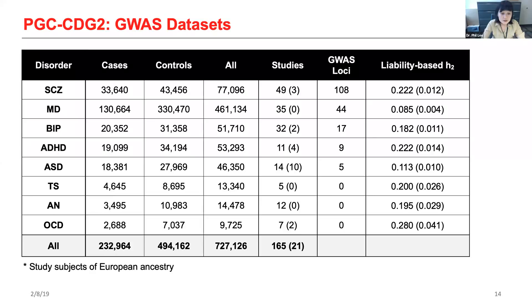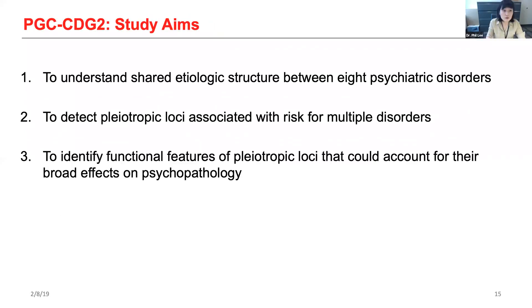Using these datasets, we had three major aims. First, we wanted to understand whether there is any shared etiologic structure or genetic relationship between these eight psychiatric disorders. We also aimed to identify specific risk loci and genes with broad pleiotropic effects. And lastly, we wanted to investigate whether there are any functional features of pleiotropic risk loci that could explain their broad effects on psychopathology.